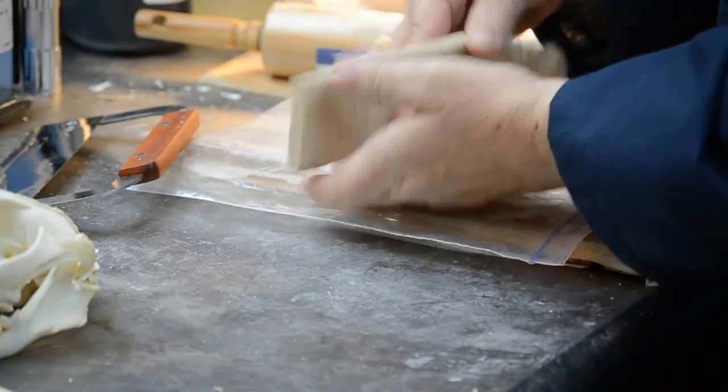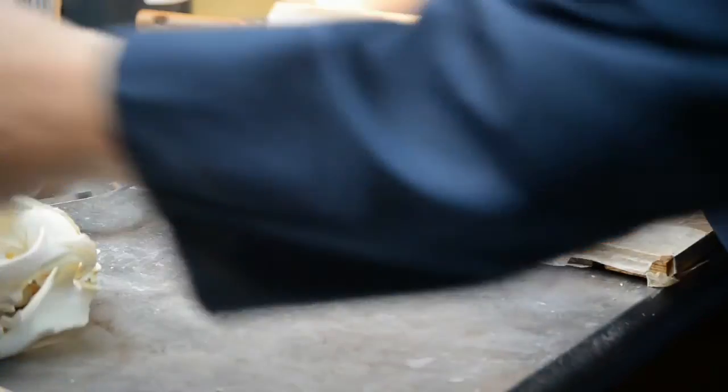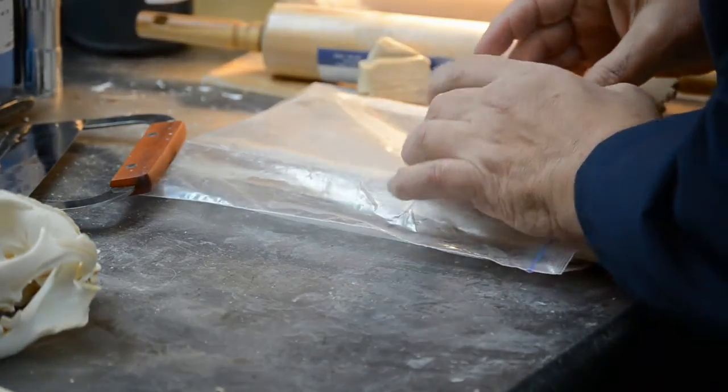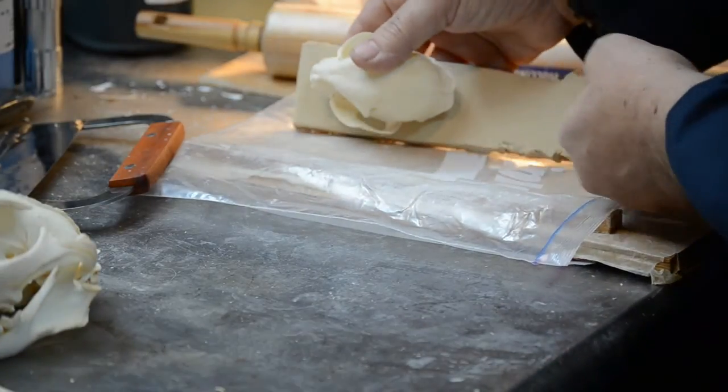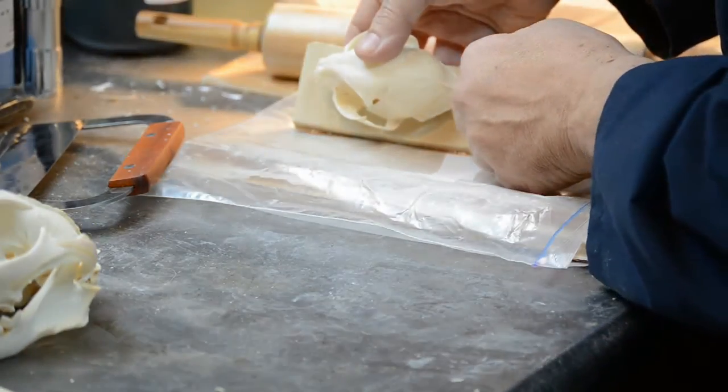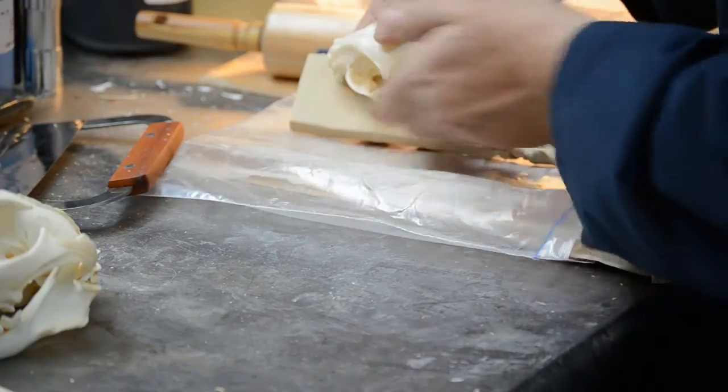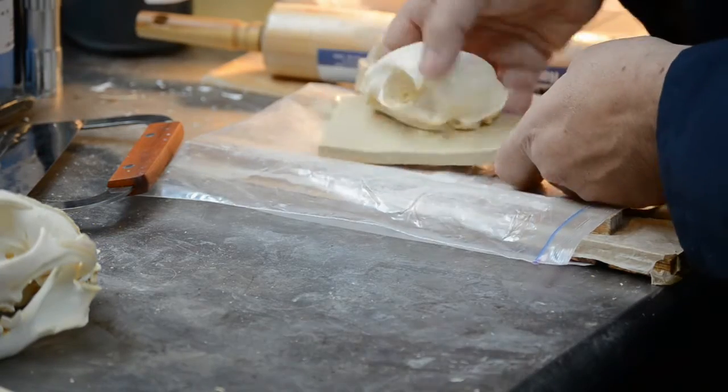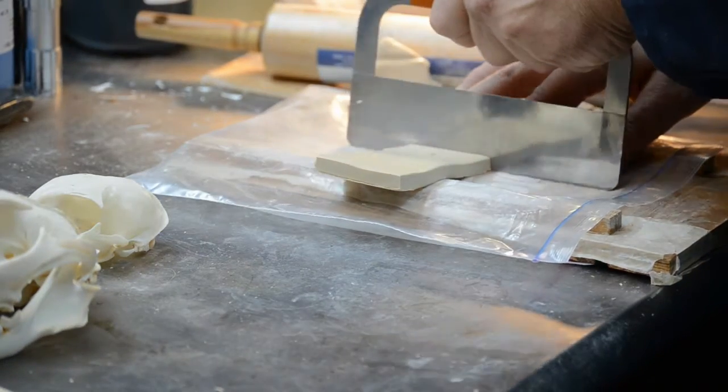Now I'm going to measure off how much length of clay I need for the skull as well as the width. As you can see, the skull is on here. I want to have a little bit of clearance at the front, a little bit at the back, don't want to overdo it. You definitely want some clearance on the side, but not too much. This can be trimmed down later. I'm simply going to mark with my fingernail where to make that cut.